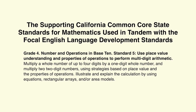The supporting California Common Core State Standards for Mathematics used in tandem with the Focal English Language Development Standards. The Mathematics Standard is Grade 4, Number and Operations in Base 10, Standard 5 – Use place value understanding and properties of operations to perform multi-digit arithmetic, where students multiply a whole number of up to four digits by a one-digit whole number, and multiply two two-digit numbers, using strategies based on place value and the properties of operations. Students illustrate and explain the calculation by using equations, rectangular arrays, and/or area models. Watch for how these California Standards are addressed throughout the lesson.